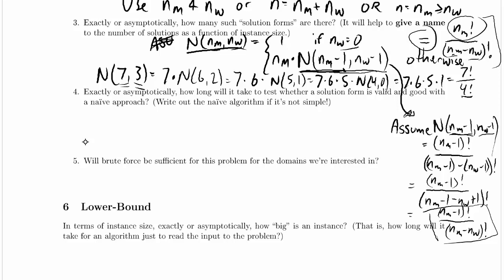Part four is, exactly or asymptotically, how long will it take to test whether a solution form is valid and good with a naive approach?